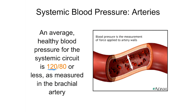The second number, the lower number — in this case 80 — is the diastolic pressure. The diastolic pressure is the pressure placed on the vessels when the heart is relaxed, or when the heart is in diastole.